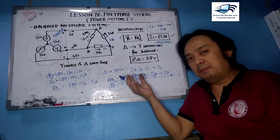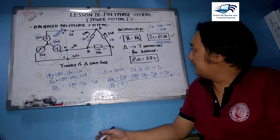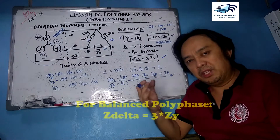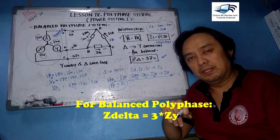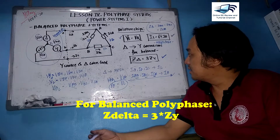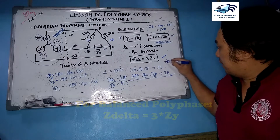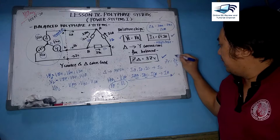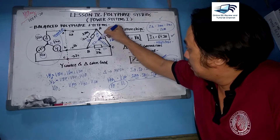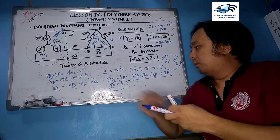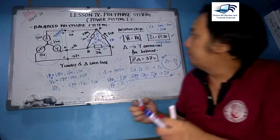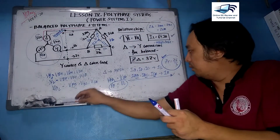If you want to apply per-phase basis to a delta-connected circuit, you perform a delta-to-Y conversion. For balanced systems, Z-delta equals 3 times ZY. This will be covered more in circuits lessons for both balanced and unbalanced impedances. To find ZY, simply divide Z-delta by 3, giving you a Y-connected load, and you can then apply per-phase analysis at phase A, phase B, or phase C.